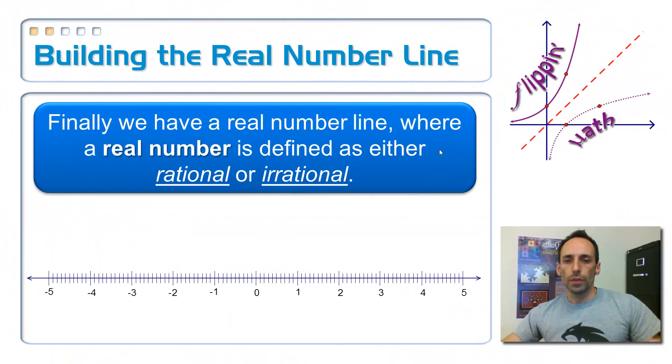So if I take all of those numbers together, put everything together, I have just made the real number line. So the definition of a real number is a number that is either one of these two things. It is either a rational number, or it's an irrational number, and that's it. That's what real numbers are.